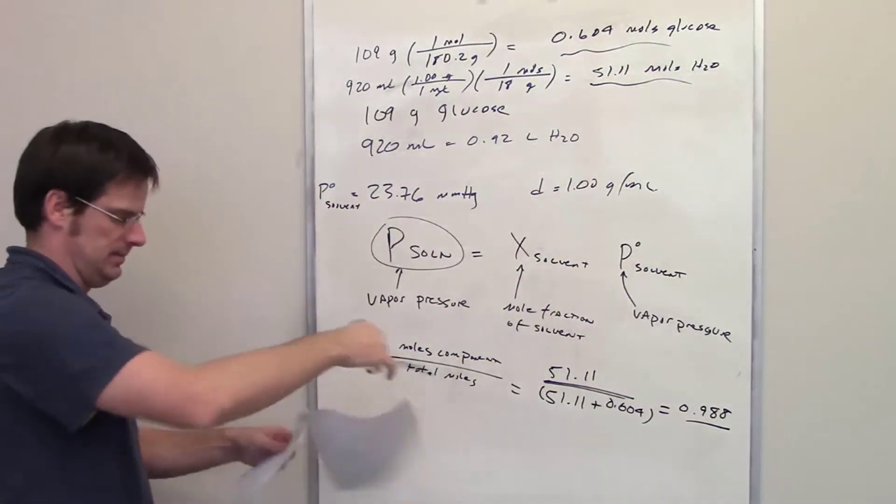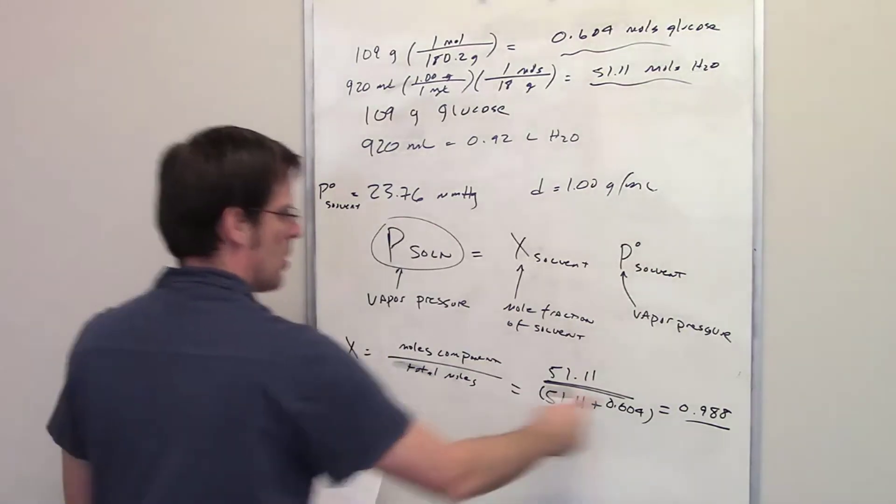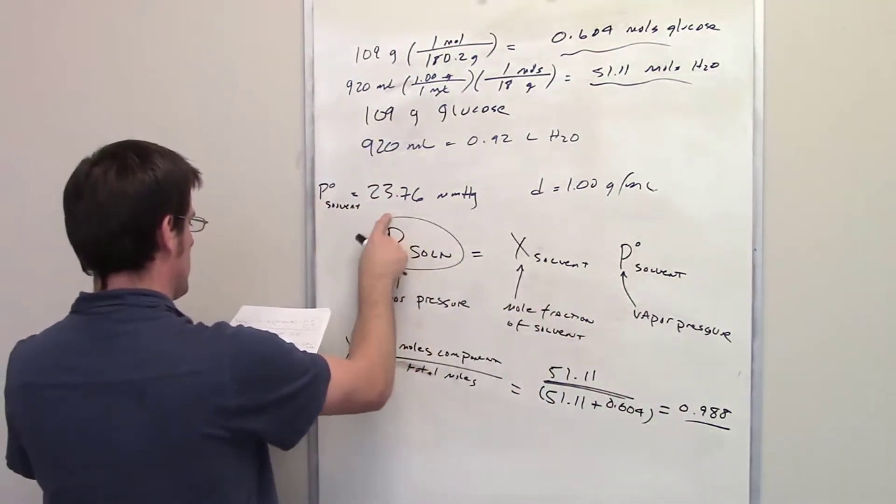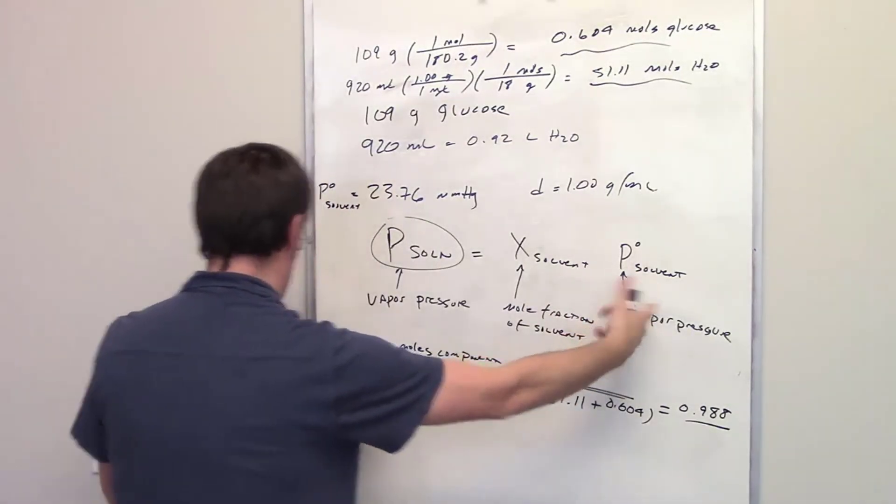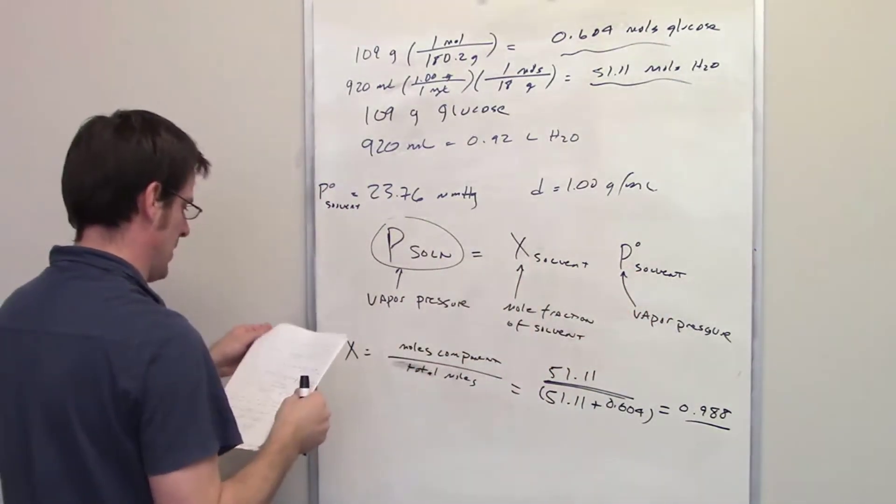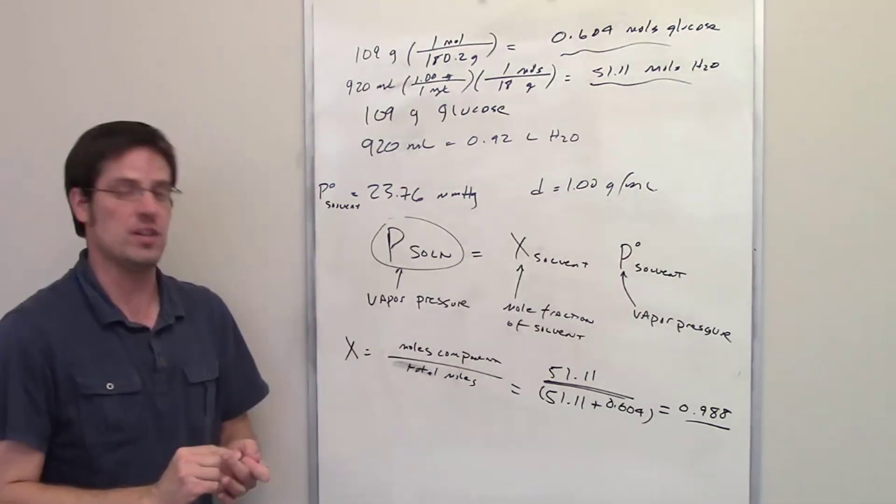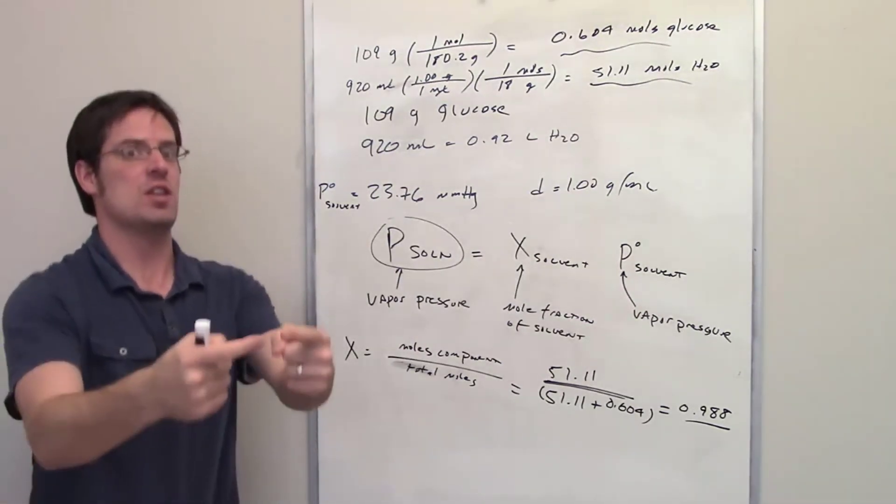All we have to do then is throw in 0.988 for this term, 23.76 millimeters of mercury for this term, and then just multiply them together. That gives us our final vapor pressure of the new solution, and hence the correct answer.